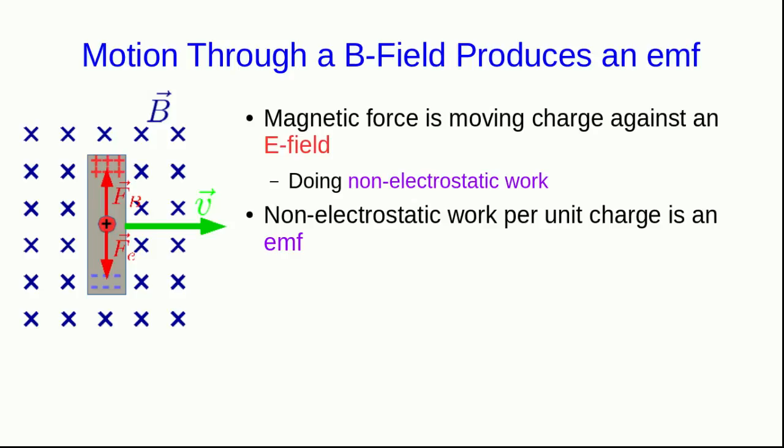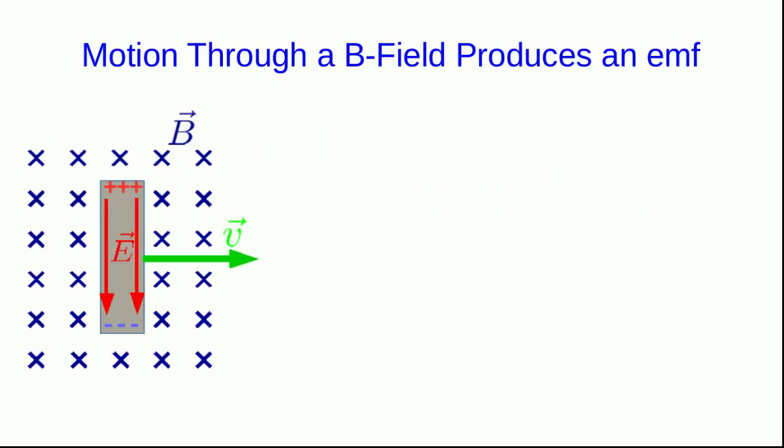Well, we already have a name for non-electrostatic work per unit charge. That's an EMF. And so the fact that we have a conducting object moving through a magnetic field has established an EMF across the moving rod.